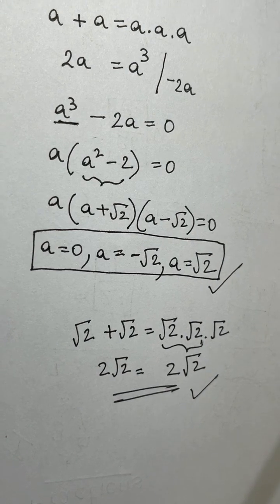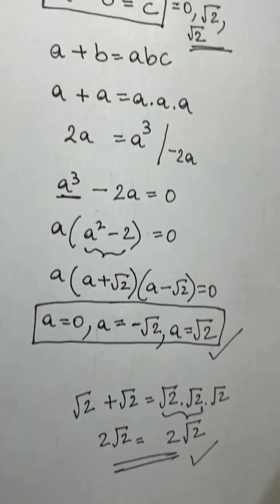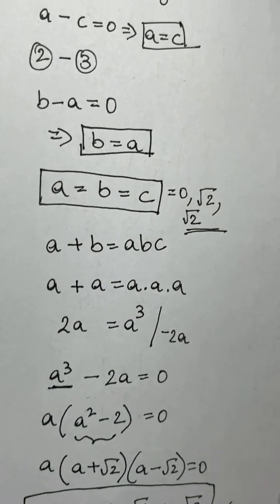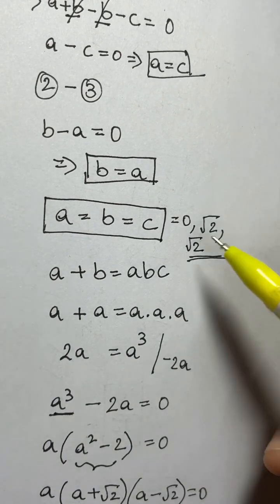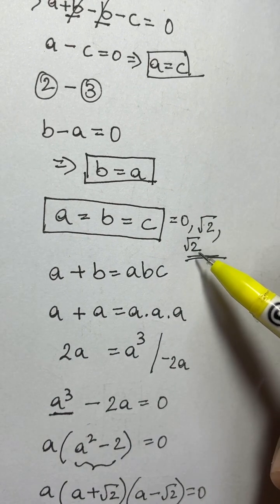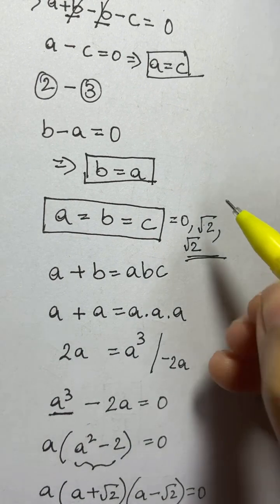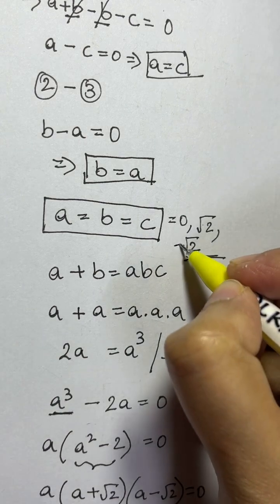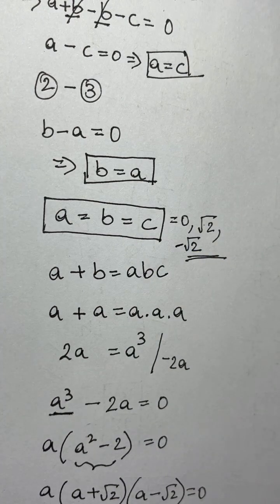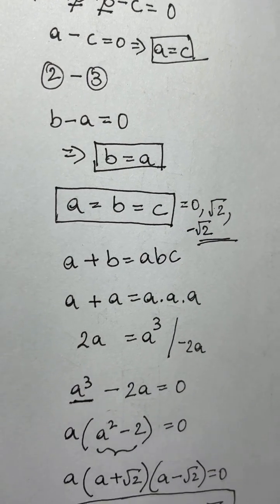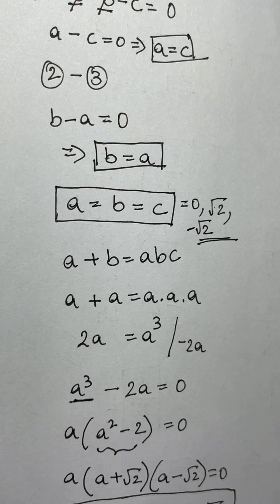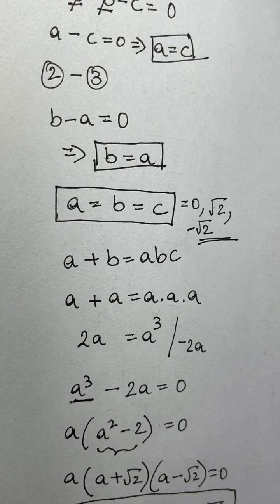So we have found the values of a, b, and c: either zero, square root of 2, or negative square root of 2. Thank you so much for joining. If you have any suggestions, you can write them down in the comment box. Bye bye, take care!